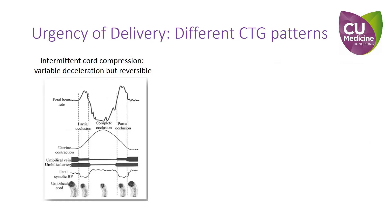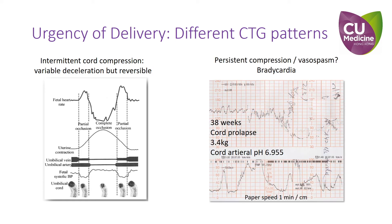In fact, fetal heart rate may or may not be abnormal during cord prolapse, depending on whether there is cord compression or vasoconstriction. When there is cord compression, the fetal heart rate undergoes decelerations as a result of baroreflexes. These decelerations are usually reversible when compression is relieved, usually in relation to uterine relaxation. Hence, the risk of persistent fetal hypoxia is low. On the other hand, if there is persistent cord compression or vasoconstriction, persistent fetal hypoxia may result in fetal bradycardia.